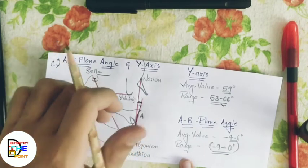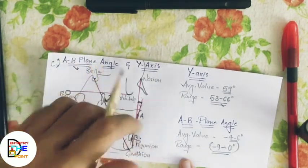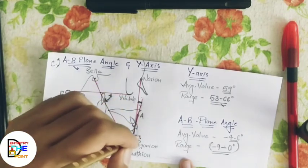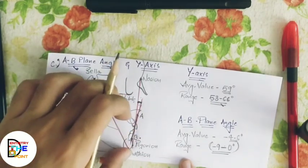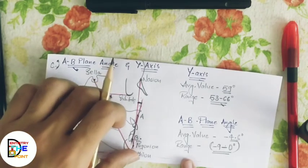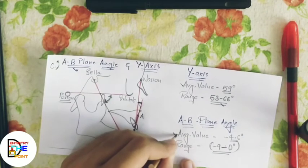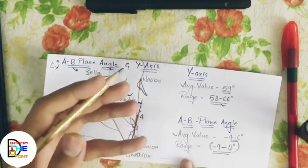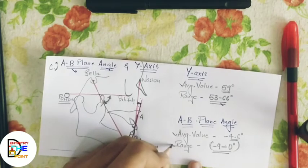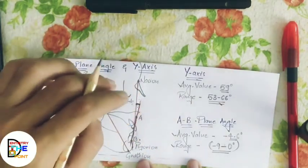The AB plane angle value is always negative because the mandible is positioned slightly behind the maxilla. However, in skeletal Class 3 cases, the mandible is forward and the angle becomes positive. In regular cases it is negative; in skeletal Class 3 cases it becomes positive. The average value is minus 4.6 degrees, ranging from minus 9 to 0.